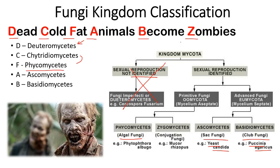The last one, Z, stands for Zygomycetes, also known as conjugation fungi — that's why the name Zygomycetes. Examples include Mucor and Rhizopus.